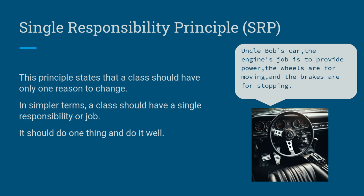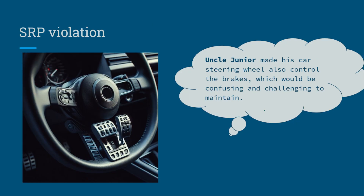For example, here we have Uncle Bob's car. The engine's job is to provide power, the wheels are for moving, and the brakes are for stopping — and not anything else. But with SRP violations, Uncle Junior made his car's steering wheel also control the brakes, which is confusing, challenging to maintain, and probably caused him to crash on his first trip.